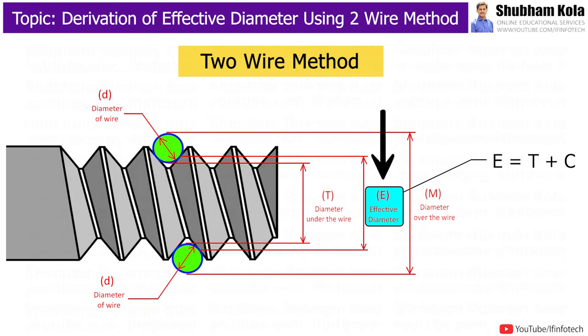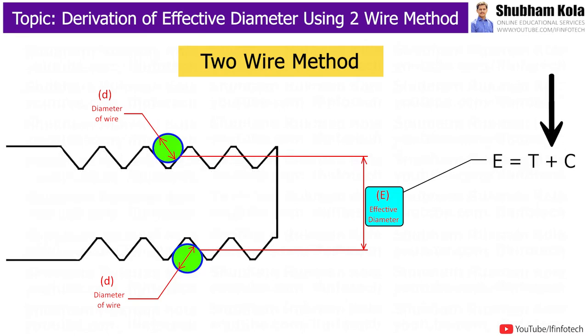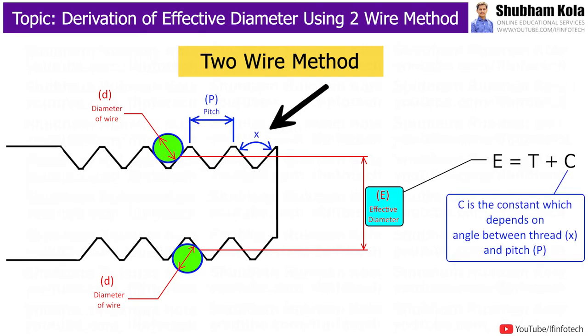An effective diameter is nothing but this particular diameter indicated as capital E. An effective diameter is equal to T plus C, where C is the constant which depends on angle between thread and pitch.